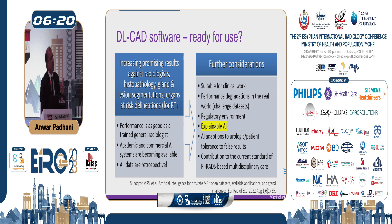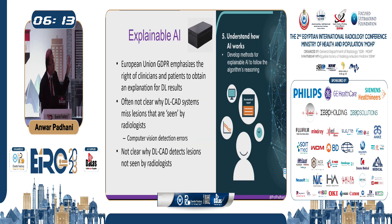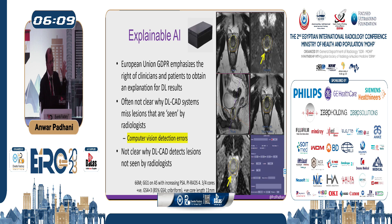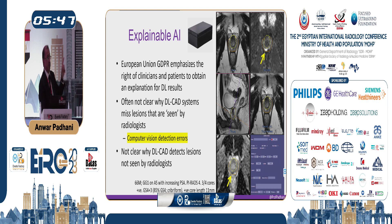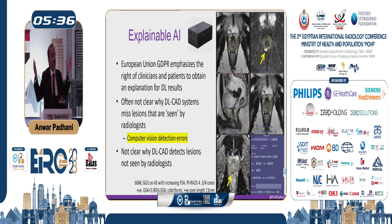The AI is often a black box, and you have to be careful. In the new EU regulations, there is a requirement that AI must explain why it says something. Here is an obvious PIRADS IV lesion that everybody can see — even medical students — but the AI says negative. This is in fact a cancer. The AI doesn't give you an explanation. If you believe it, you are going to miss cancers.